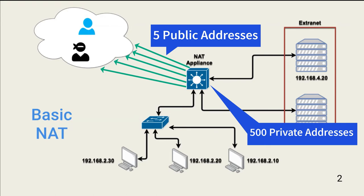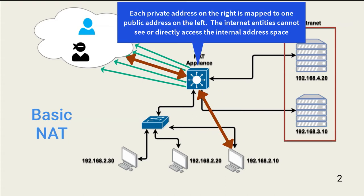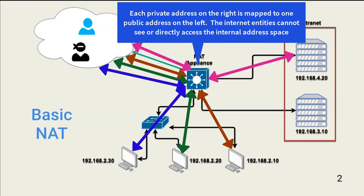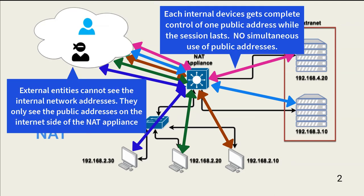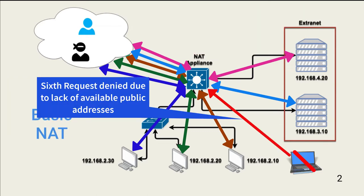The NAT device, a VPN appliance, maps internal sessions to the shared public addresses. It's important to understand that basic NAT operating at OSI layer 3 enables a one-to-one relationship. In other words, a public address can only support one internal address at a time. In our example, if the five public addresses are already in use, the sixth request for a NAT connection is denied.